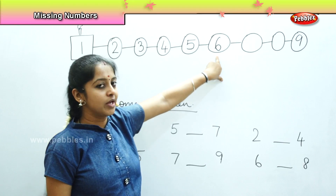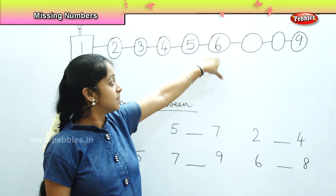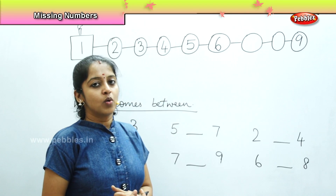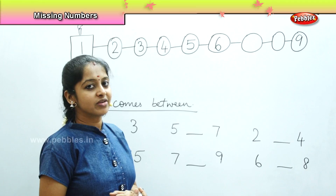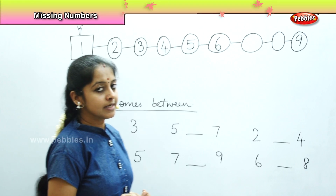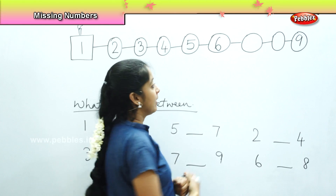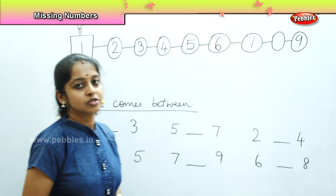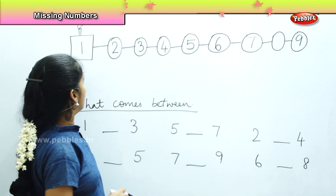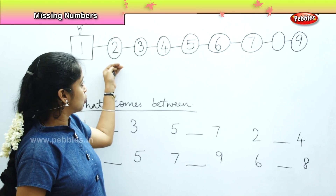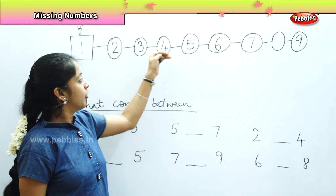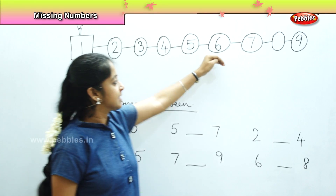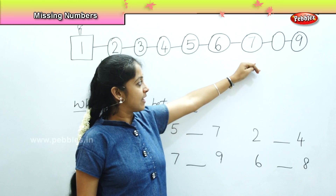After 5, what is the next bogey? It is number 6. Very good. So what will come after 6? It is number 7. Shall we count? Number 1, 2, 3, 4, 5, 6, 7.